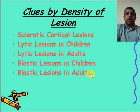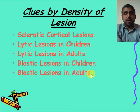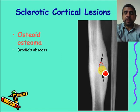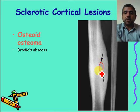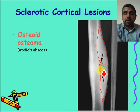Regarding clues from the density of the lesion, look for sclerotic cortical lesions or lytic lesions in children and adults — they differ. The most famous sclerotic cortical lesion is osteoid osteoma, which characteristically presents with pain worse at night, relieved by aspirin and other NSAIDs. There is a lytic focus — the nidus — cortically based and eccentric within the diaphysis, with characteristic cortical thickening surrounding it. On MRI, the nidus is hyperintense on T2-weighted and fat-saturated images, indicating osteoid osteoma.